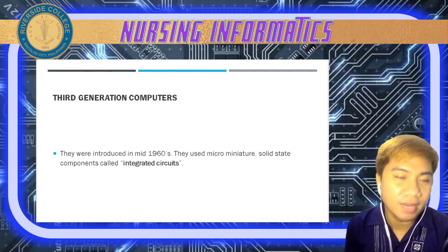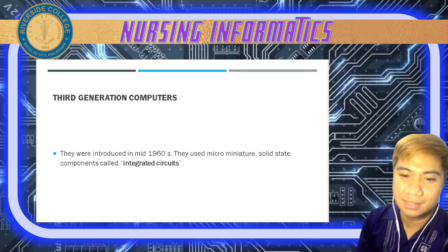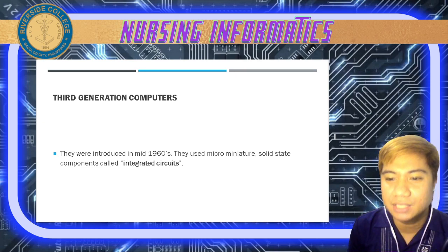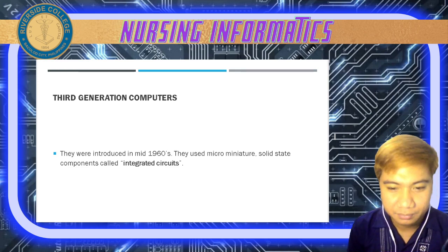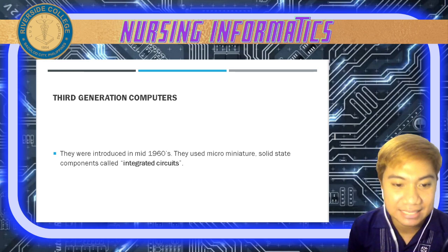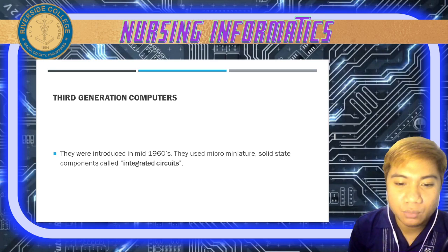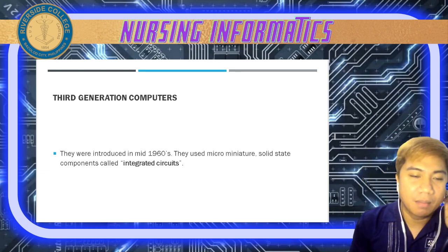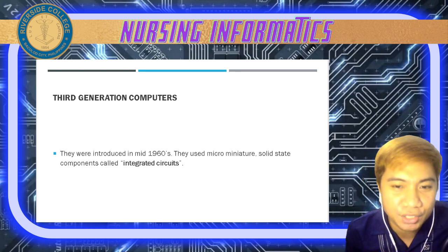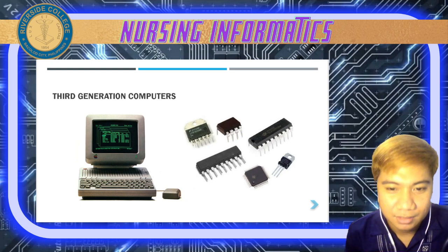In the mid 1960s, third generation computers were introduced. They used micro-miniature solid-state components called integrated circuits. An example is the IBM 360, which had about 110K of memory. It was in this generation where hard drives were first introduced for computers.